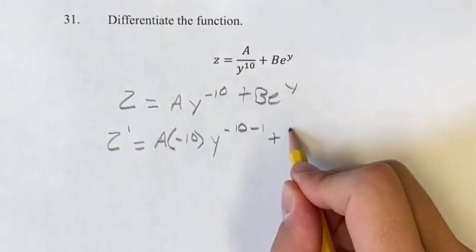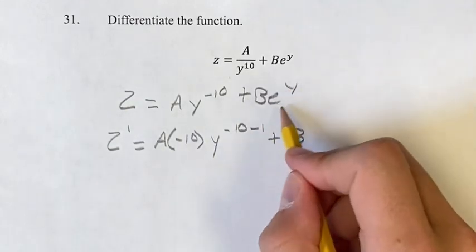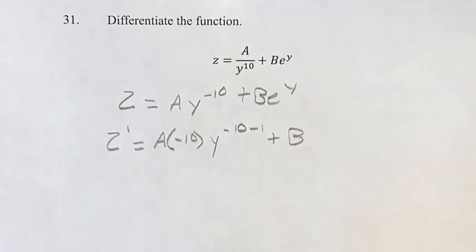And plus B, get your coefficient out of the way, and then the derivative of e to the y is just itself, e to the y.